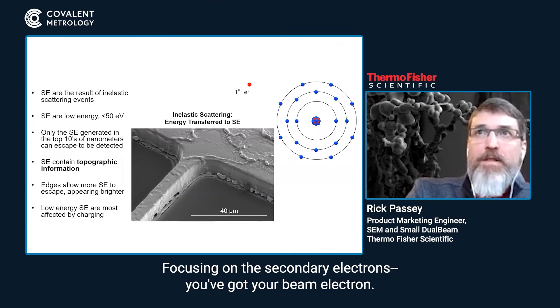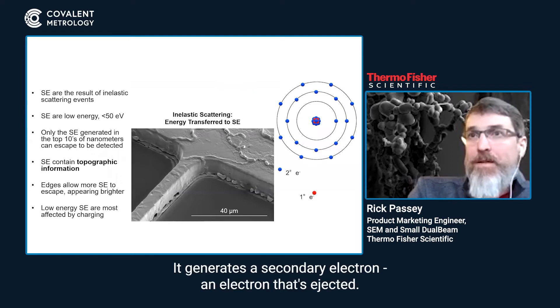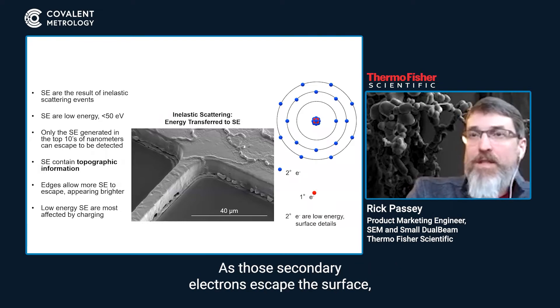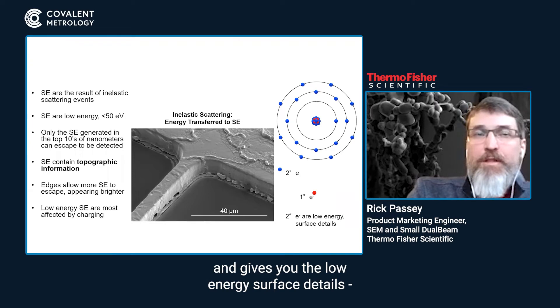Focusing on the secondary electrons: you've got your beam electron - it comes in, interacts with the sample, and generates a secondary electron, an electron that's ejected. Those electrons don't alter the material; they're simply changing places. As those secondary electrons escape the surface, there's a detector that picks up that signal and gives you the low energy surface details - very topographic information.